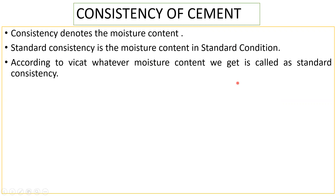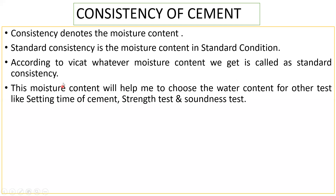In honor of Vicat, the instrument used is called the Vicat apparatus, and with that apparatus we try to find the consistency of cement. The main question is: why does the consistency of cement have to be checked? Because the moisture content we find will help us choose the water content for other tests like the setting time of cement, the strength test, and the soundness test.